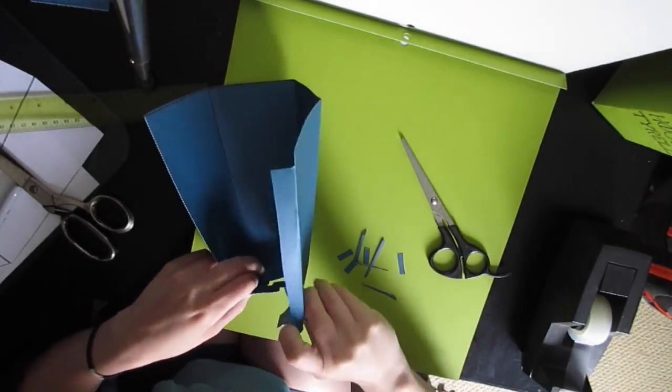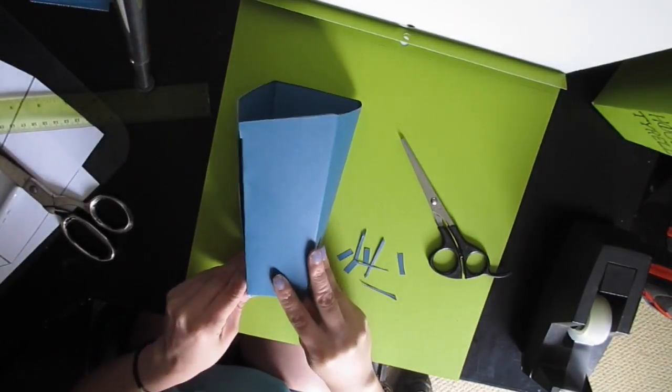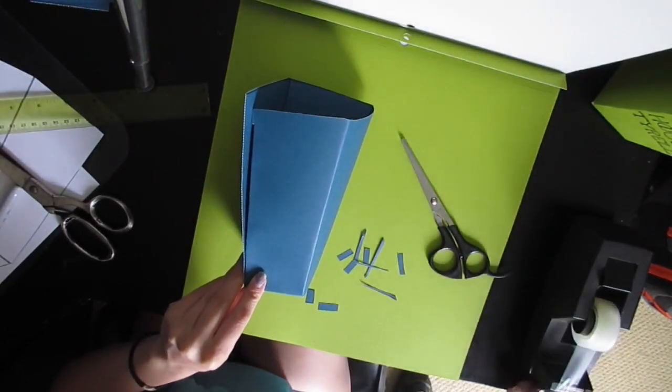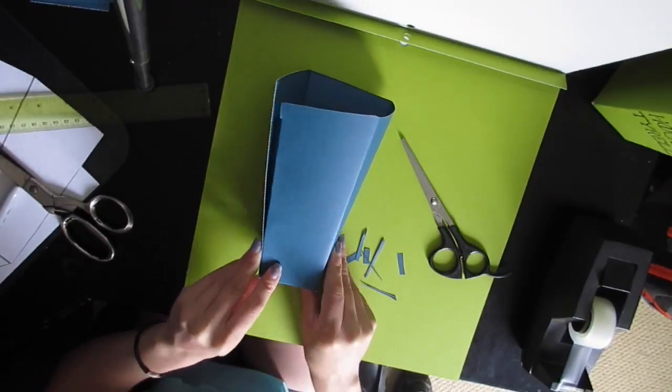Now bend all of the pieces together and make sure you tape the bottom. This will make sure that your popcorn box stands straight up.